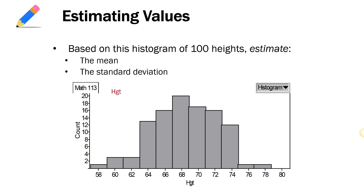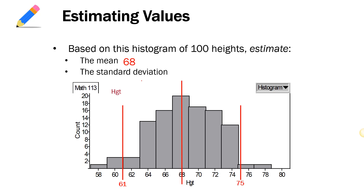First, I want to look at the mean. In a bell-shaped symmetric distribution, the mean is going to be right in the center of our data, so I draw a line straight down the center and wherever I cross the x-axis, that's my mean. For the standard deviation, I apply the rule by coming in a little bit — about 2.5% on either side — and drawing my lines.